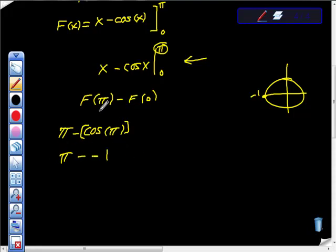This is my f of pi. My f of pi is pi plus 1. Then I'm going to use this negative sign right here, so minus.